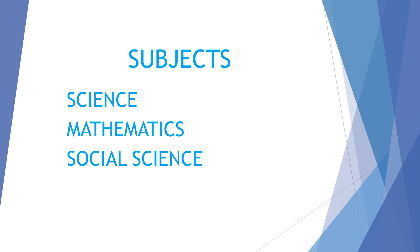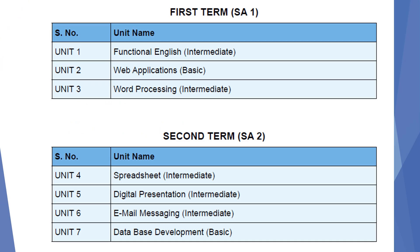The syllabus is divided in two parts: first term SE1 and second term SE2. In first term, we will be covering Unit 1 Functional English, Unit 2 Web Applications, and Unit 3 Word Processing.